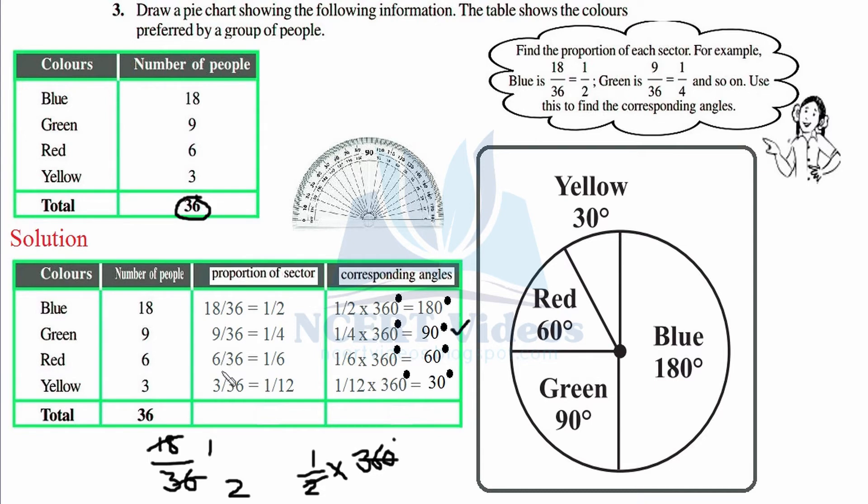Red: six people like it out of 36, so 6 over 36. 6 goes into 6 once, 6 times 6 is 36, so 1 over 6. One-sixth of central angle 360 degrees - 360 divided by 6 equals 60 degrees each.